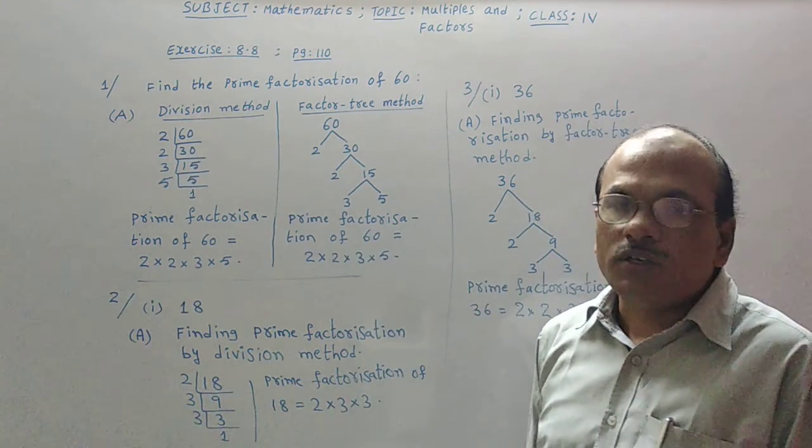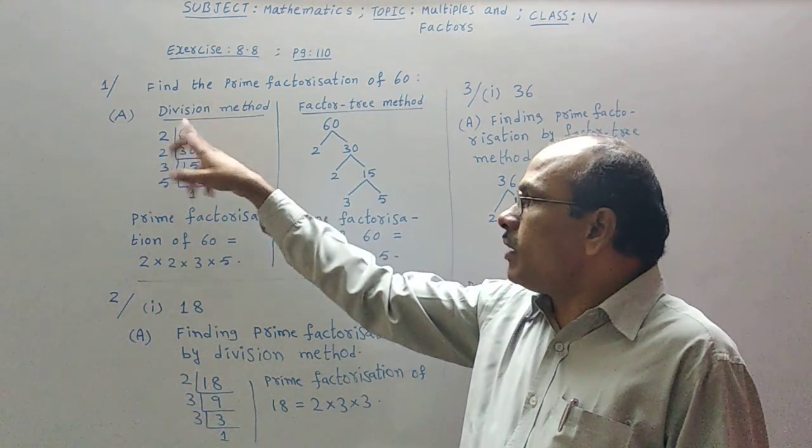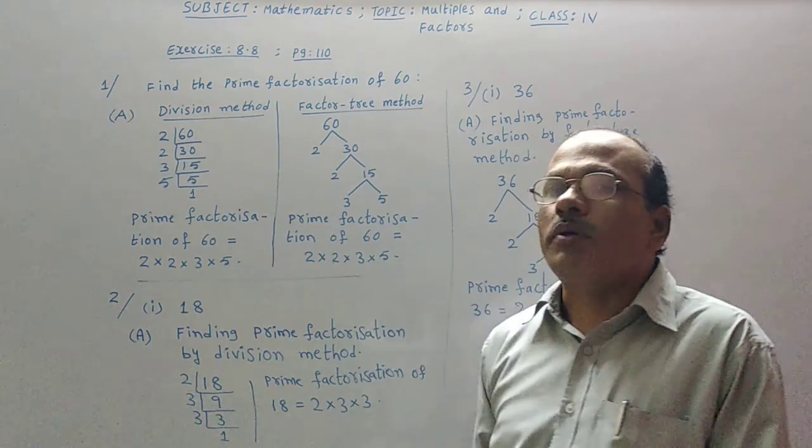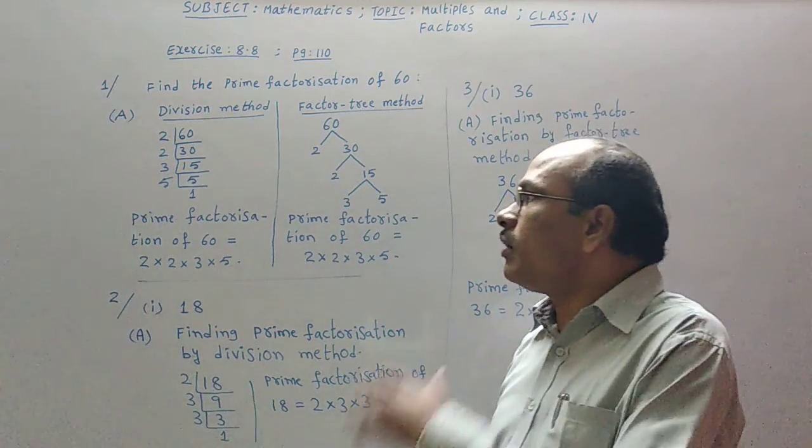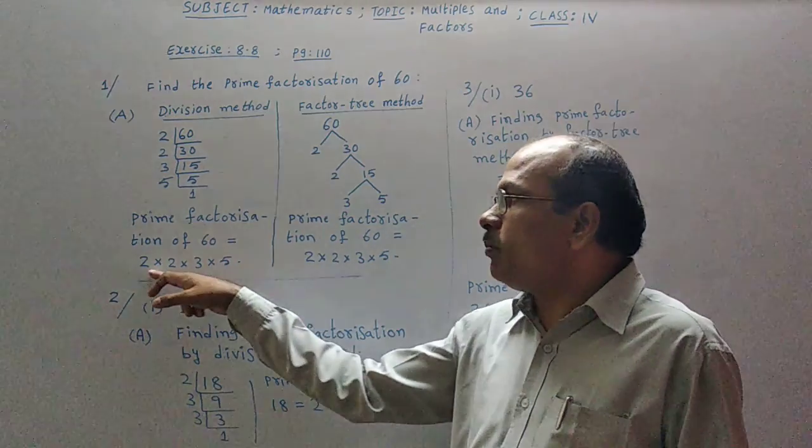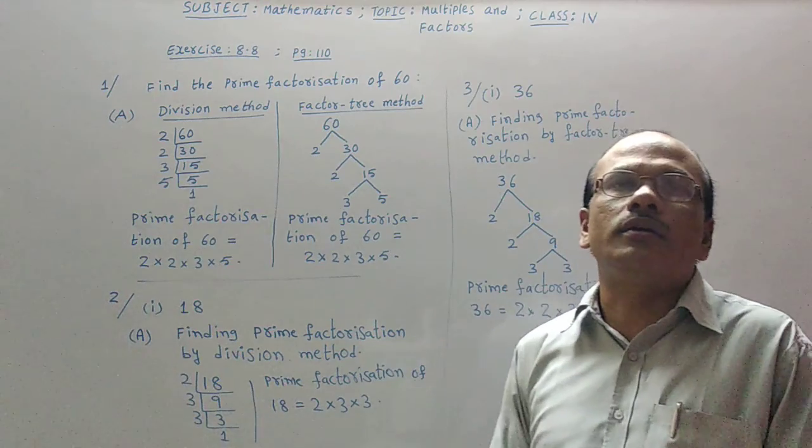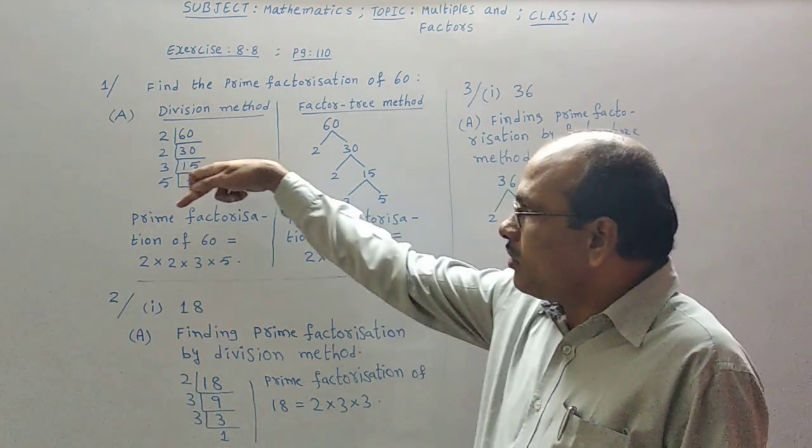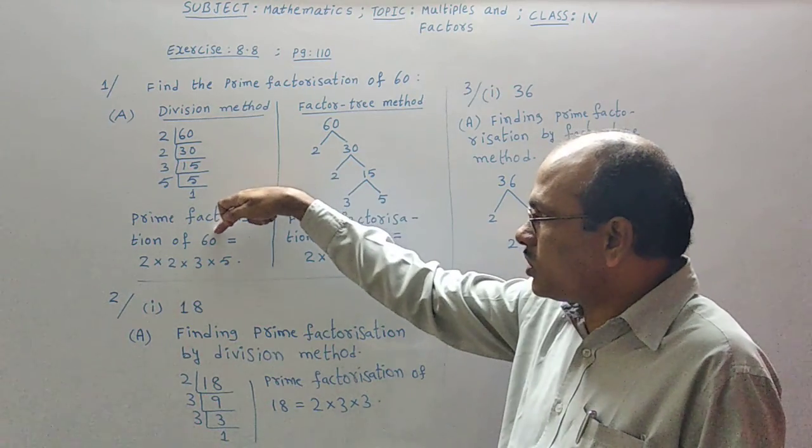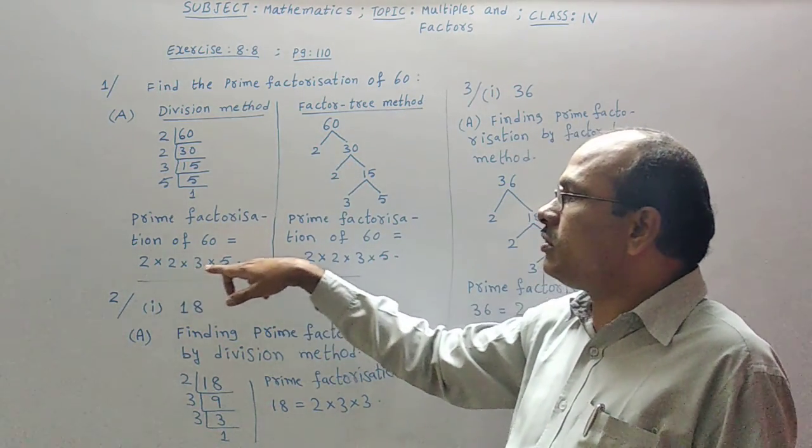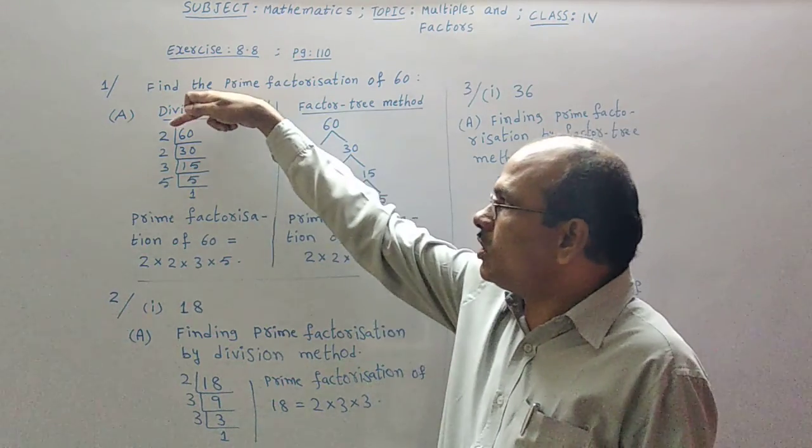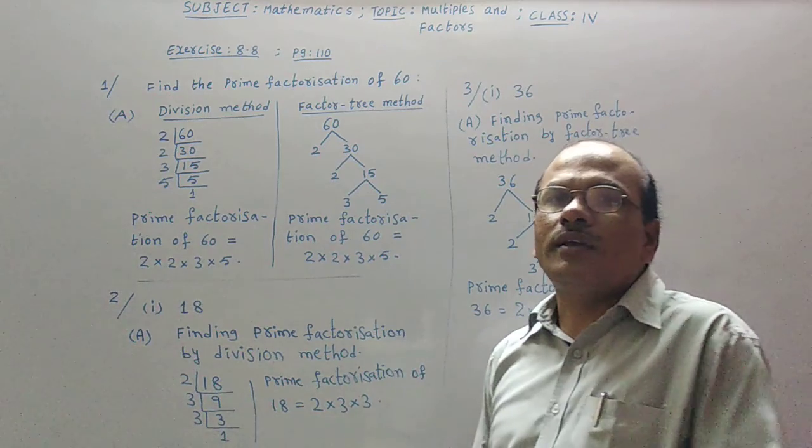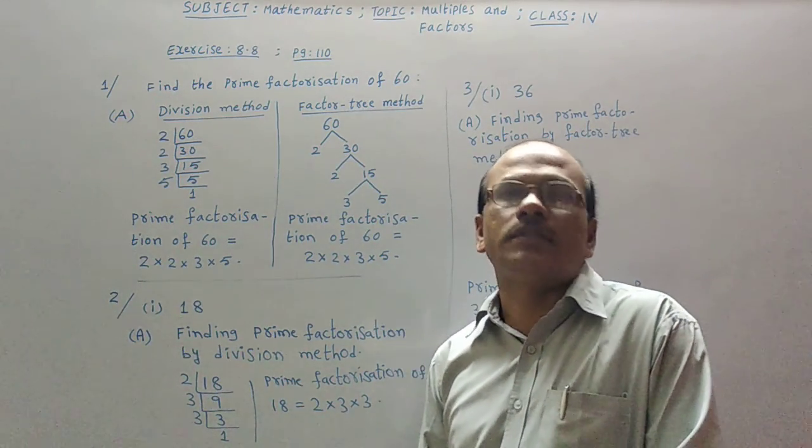So when we use prime numbers to divide the given number, we will get all prime numbers only. Those all prime numbers in multiplication form we have to write. That is called prime factorization of the given number. Prime factorization of 60 is equal to 2 into 2 into 2 into 3 into 5. All those are written and involved in the answer part.